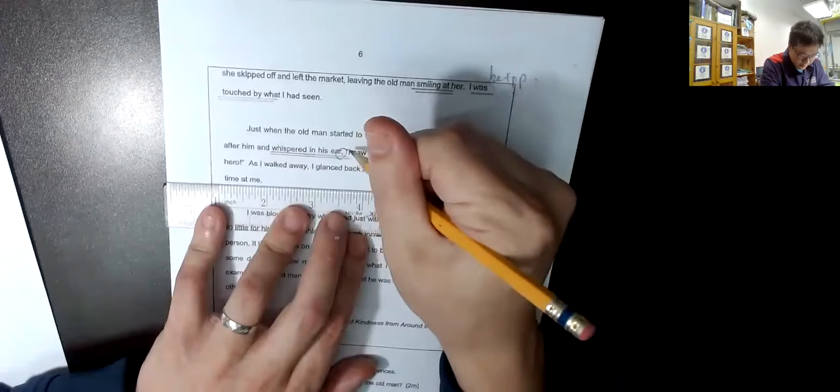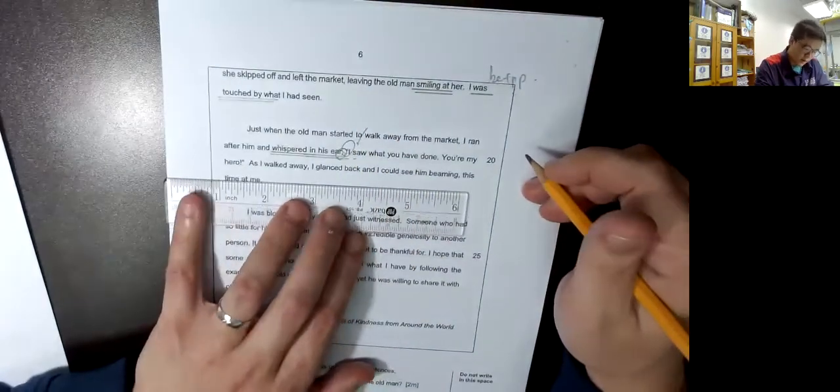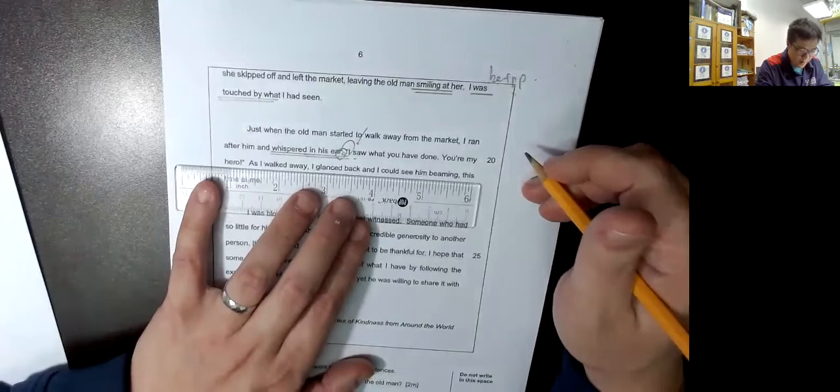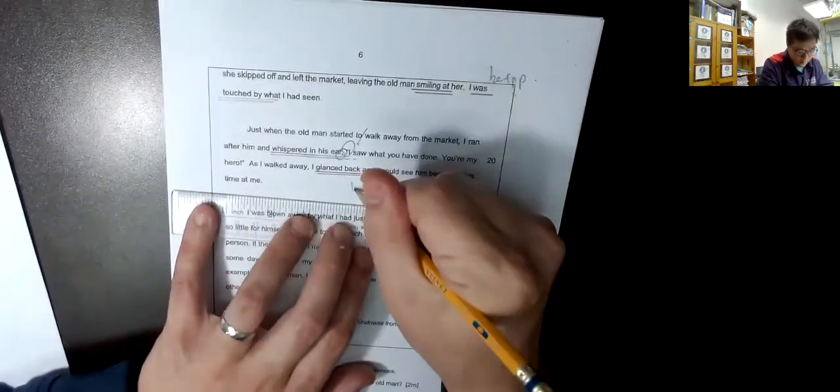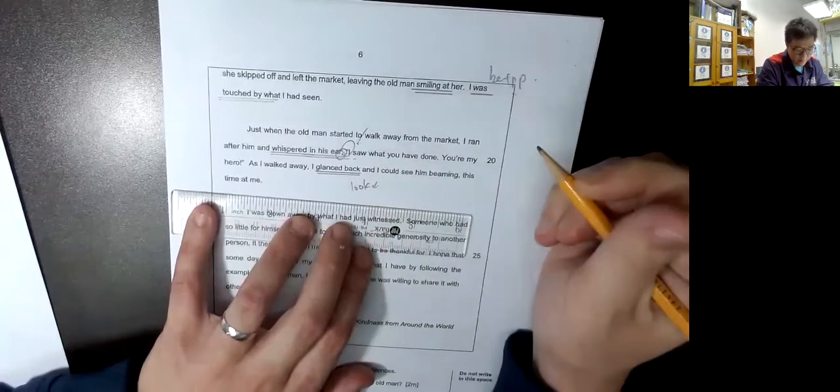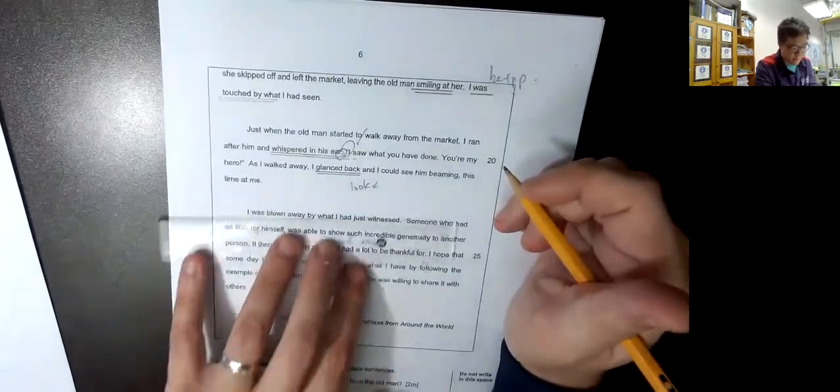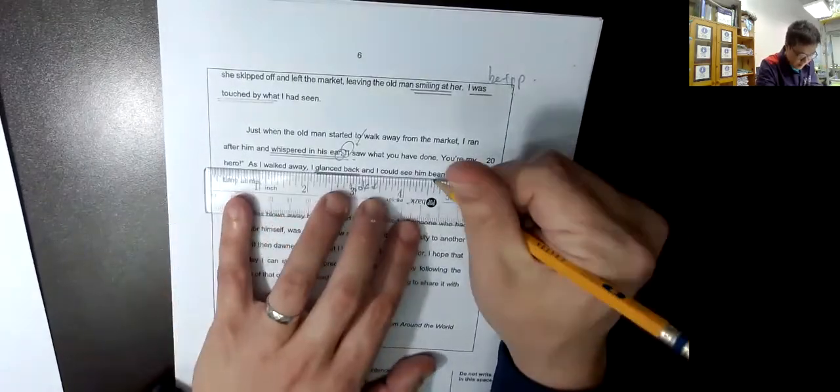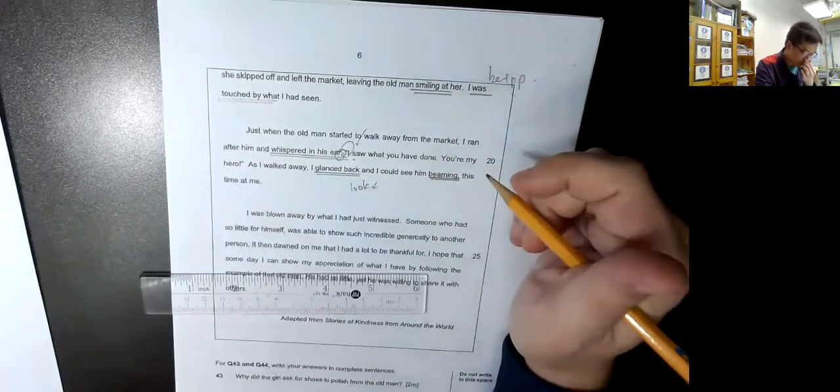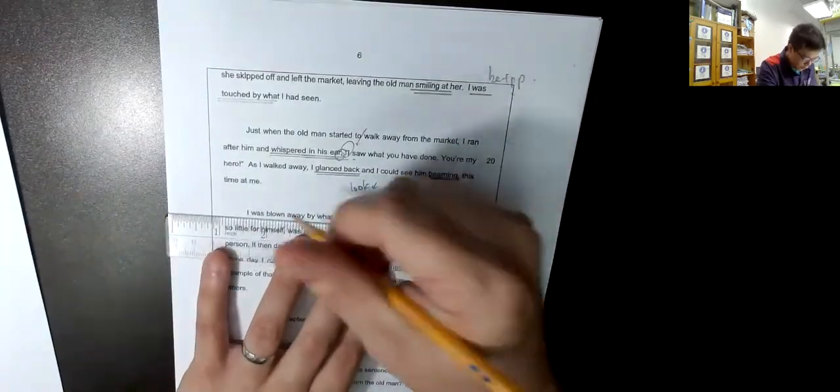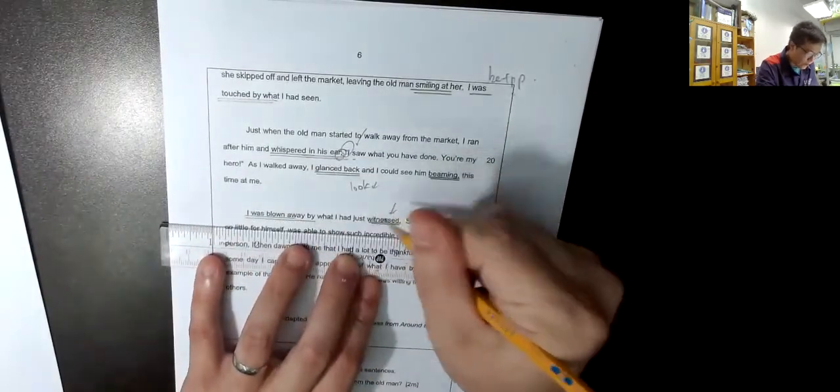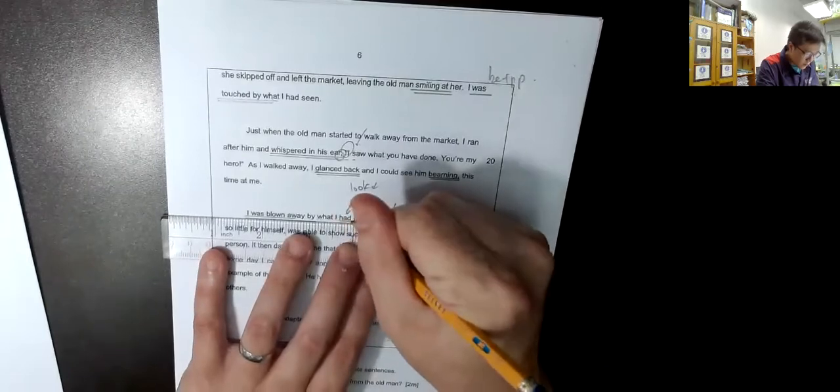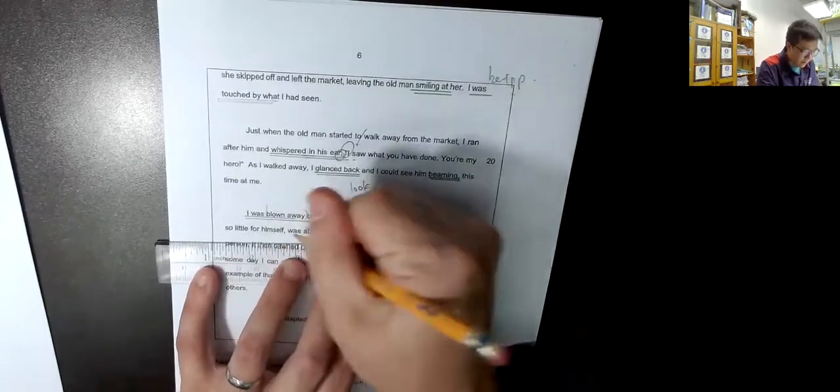看見到我, 爸爸好嗎? I saw what you have done, and you are my hero. As I walked away, I glanced back. Glanced是望一眼二字, 但是望得短暫一點. And I could see him beaming this time at me. Beaming即是開心. I was blown away, 被動句, B加PP. I was blown away by what I had just witnessed. Witness是見到, B加PP. 我被吹, 我被感動, 因為我見到的東西, 我被感動.